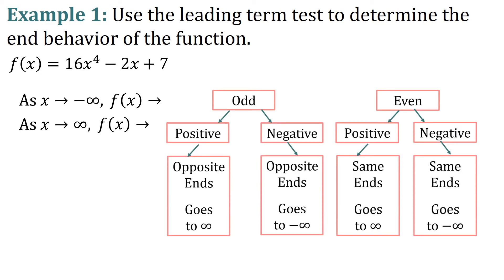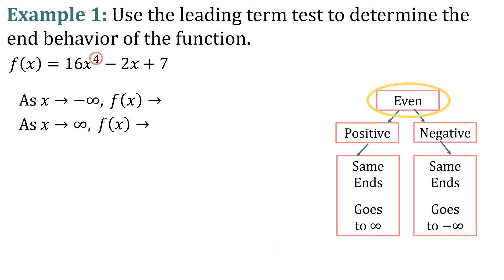Using our flowchart: first, is this function odd or even? Our power is 4, which is even. So we can eliminate the odd branch. Now, is the leading coefficient positive or negative? We have 16, which is positive. So we know both ends go to infinity. As x approaches negative infinity, f of x approaches infinity. And as x approaches infinity, f of x approaches infinity as well — both ends are going up.